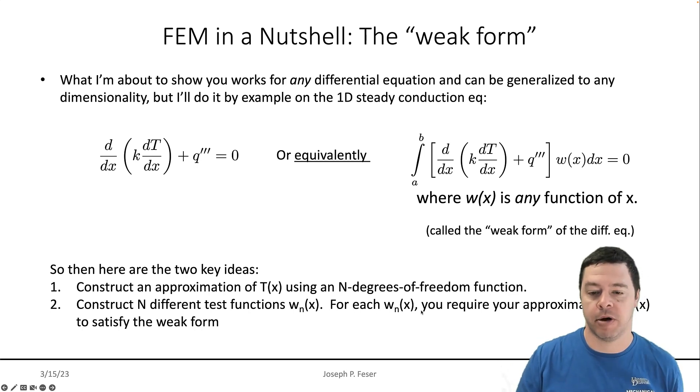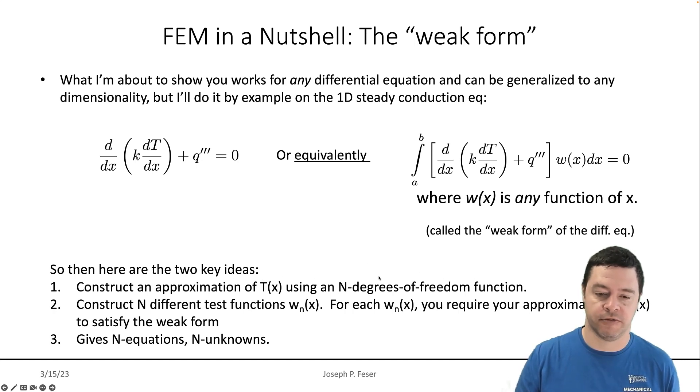So for each different test function we come up, we'll require that our approximate solution satisfies this equation exactly. So we'll require that for that test function, our test function, our T(x), our approximate T(x), will exactly satisfy this weak form. And the hope is that if we construct the test functions judiciously and we use an approximate form of T(x) that can potentially represent the correct solution, we get something that looks pretty close to the actual temperature profile when we're done. So if I look at that, that'll give us an equation. So one equation for each test function we use. And there are n unknowns, one for each degree of freedom in our test function for temperature.